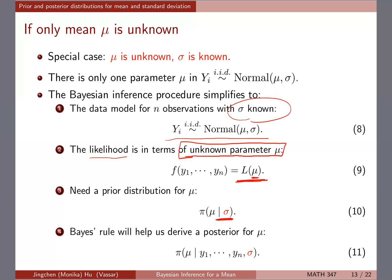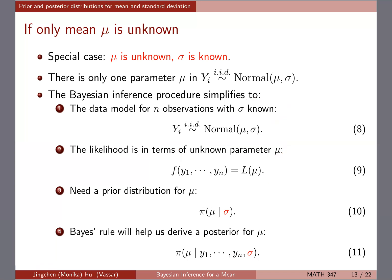To be clear about notation: there are two parameters in this model, but we're assuming one is fixed. I always put the known parameter after the conditional sign. The prior distribution for mu is written as pi(mu | sigma), and the posterior is conditioned on both the data and the known sigma. This is good practice so that later, when we have two unknown parameters, you know exactly what is being conditioned.